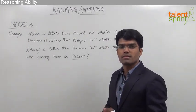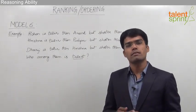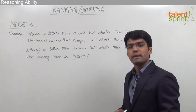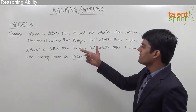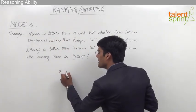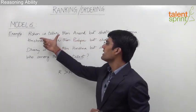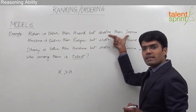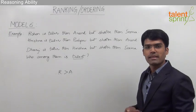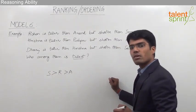To solve this question and find out the tallest person, we need to make the ascending or descending order of heights, which can be done by reading the statements. The first statement says Rohan is taller than Anand, so R > A. But Rohan is shorter than Sima, meaning Sima is taller than Rohan. This can be integrated as: Sima is taller than Rohan, who is taller than Anand.